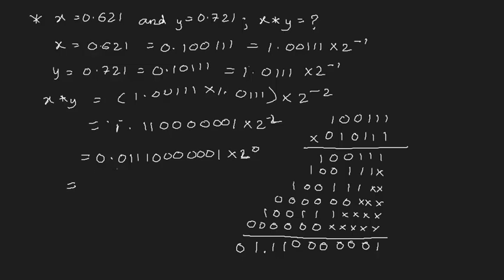Now we just add all the binary digit values: 2^(-2) + 2^(-3) + 2^(-4) + 2^(-11), which gives us 0.4379882. You can check the answer by multiplying 0.621 × 0.721 manually and you'll get something similar to this. So yes, that's about it for IEEE floating point addition and multiplication. Give a thumbs up if you understood this tutorial, and good luck!